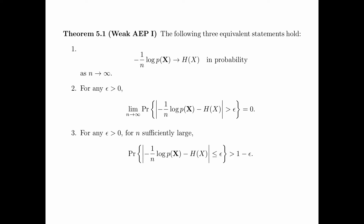Another way to say the same thing: for any epsilon greater than 0, for n sufficiently large, the probability that the absolute value of minus 1 over n log p(x) minus entropy of x is less than or equal to epsilon is greater than 1 minus epsilon.